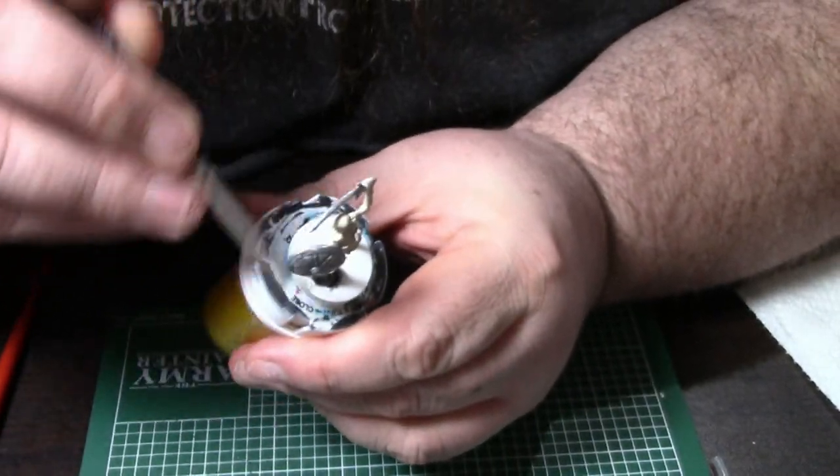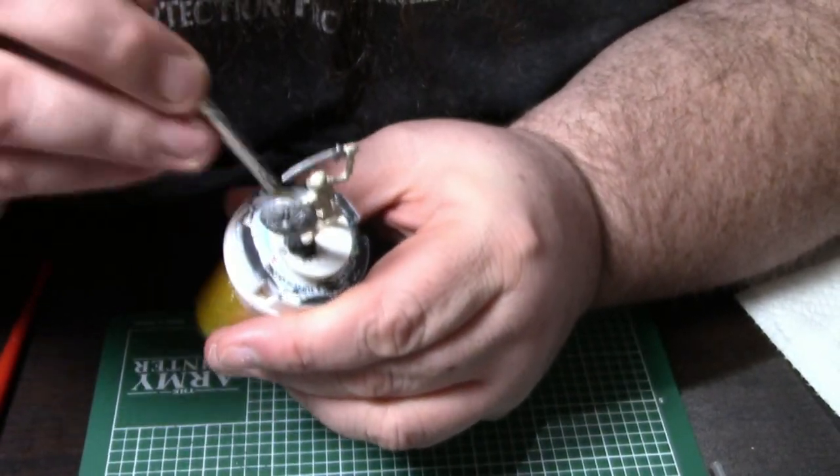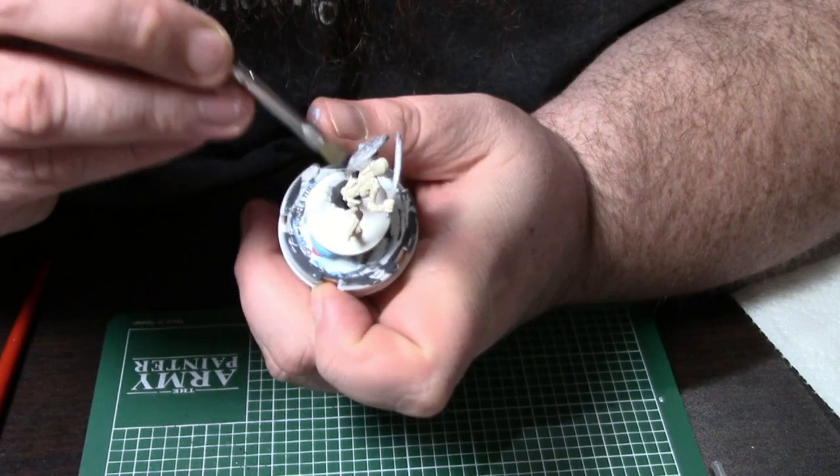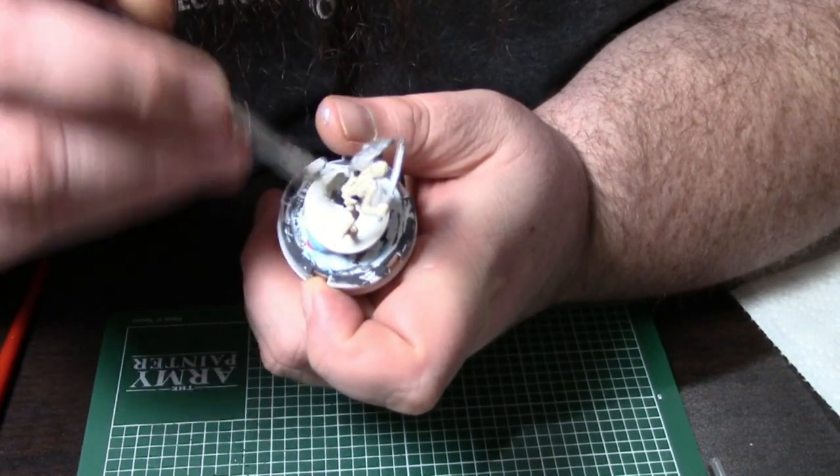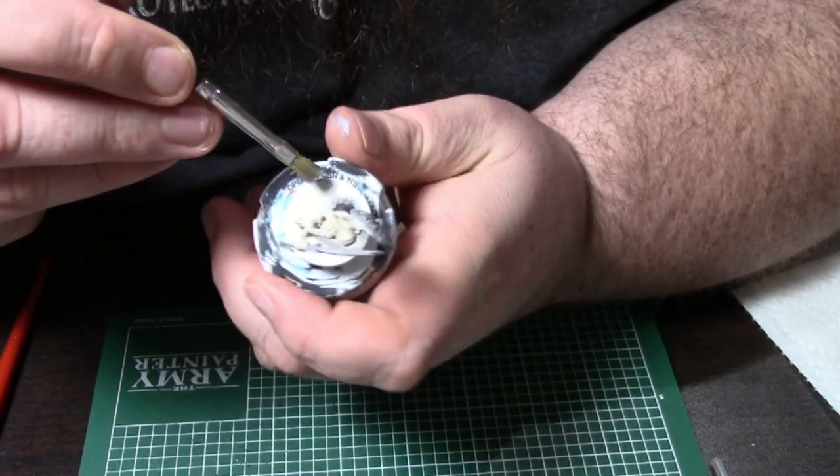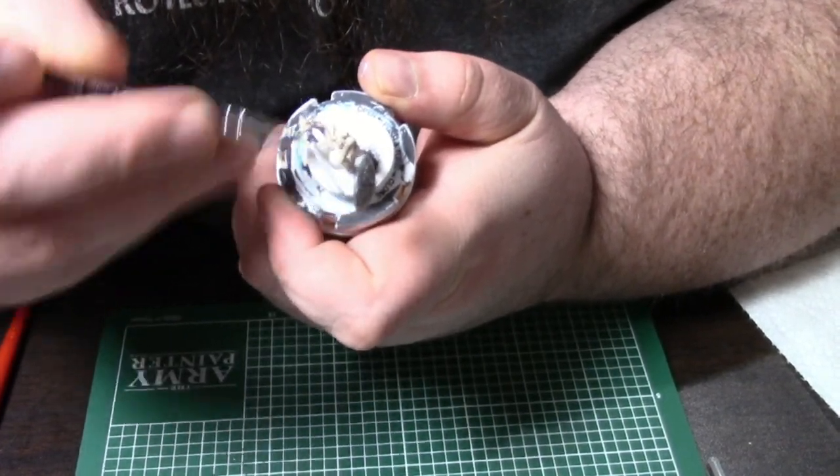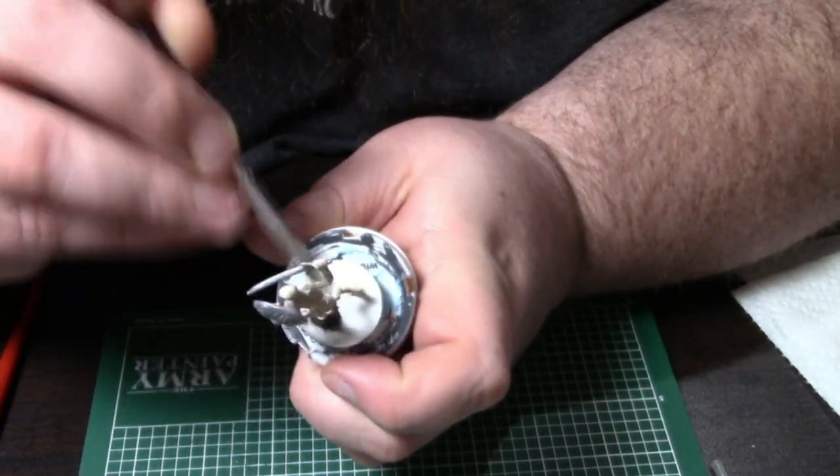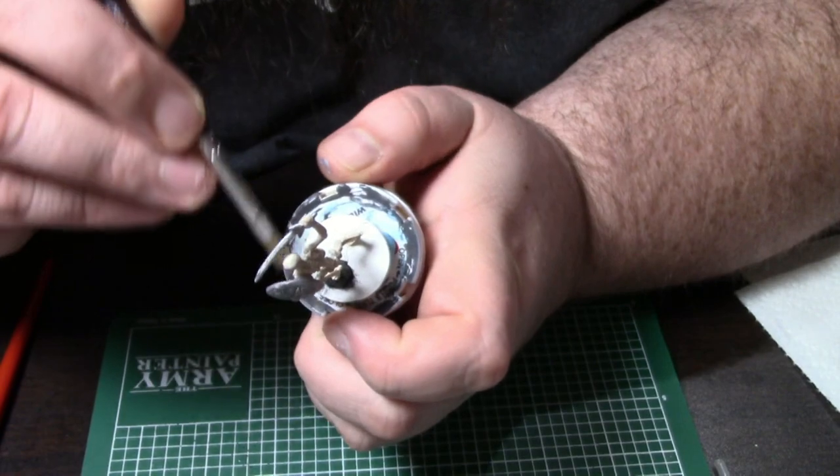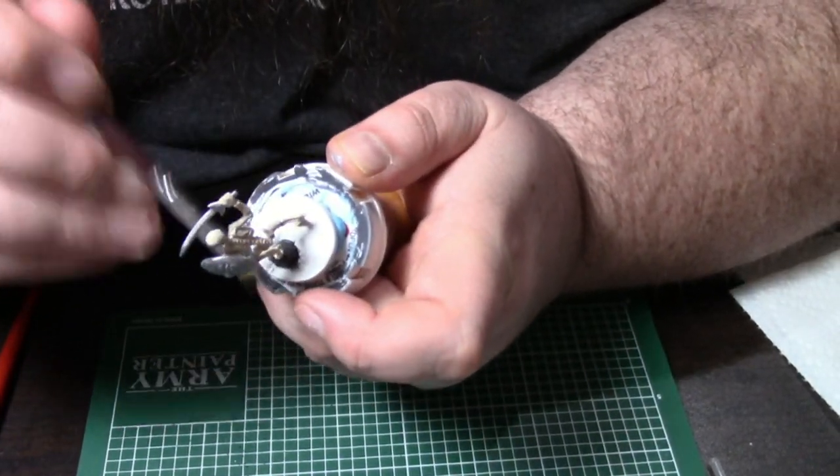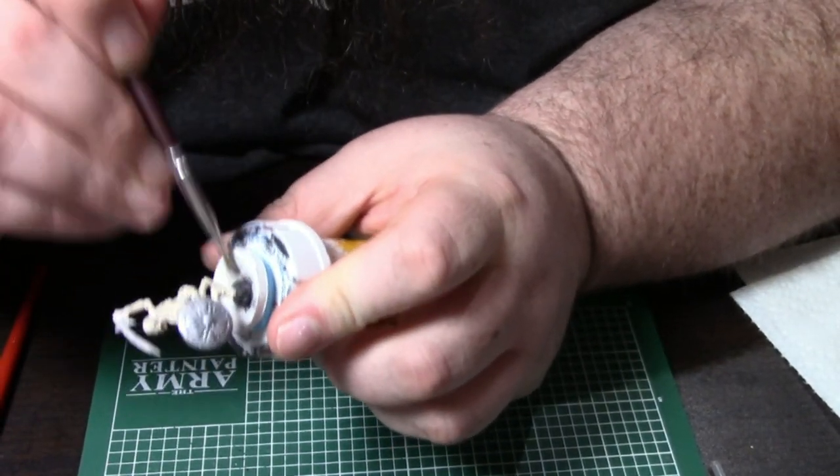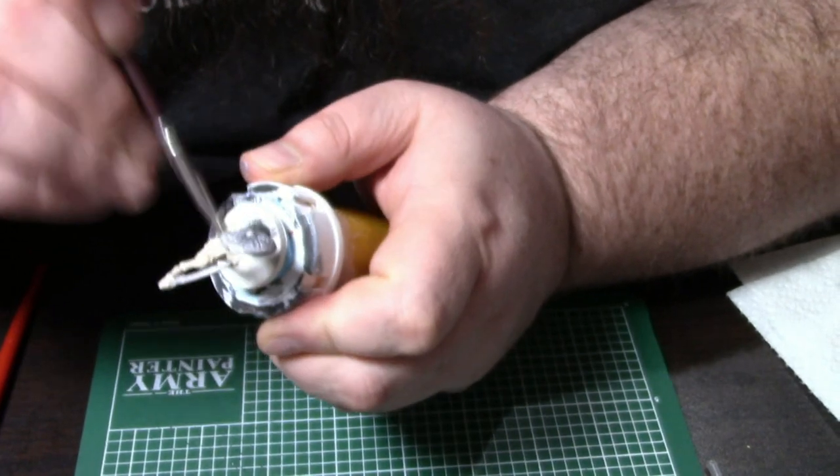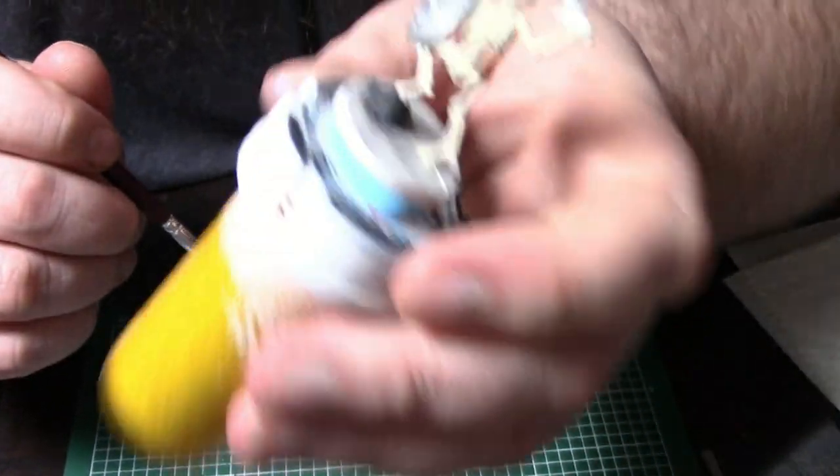So what we're going to do is we're going to brush across it just a few times until we start seeing some of that gray start showing up. And it's probably going to take a few passes before you start seeing it actually start showing up. That's how you know that you don't have a whole lot of paint in your brush. If you start seeing paint showing up immediately, then you have too much paint in your brush.